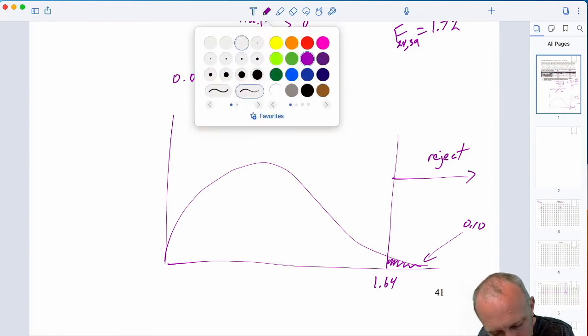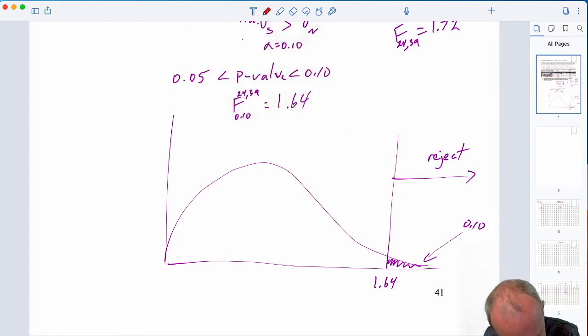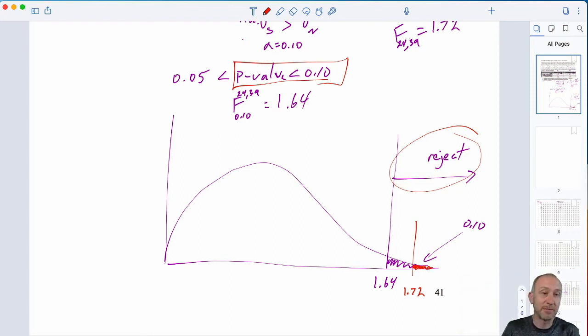Our test statistic was 1.72. So, that gives me somewhere in this region 1.72, which is certainly in our rejection space and I can see absolutely that that p-value must be something less than 0.1 because as that entire purple area was equal to 0.1 that corresponds with our critical value. My p-value, certainly critical value p-value approach always consistent.